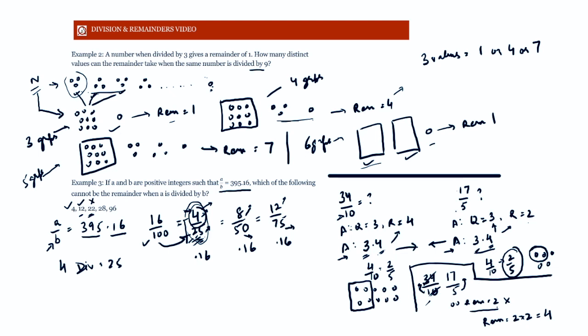Remainder 28 is a multiple of 4 (4×7), so it is possible — the divisor would be 25×7 = 175. Remainder 96 is also a multiple of 4, so that's possible too with divisor 25×24 = 600. So 22 is the only value that cannot be the remainder. In summary, the decimal part of a number gives us the ratio of the remainder to the divisor — as we change the divisor, the remainders change but always maintain that fixed ratio.